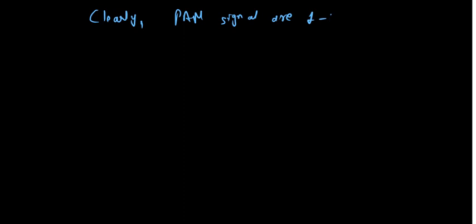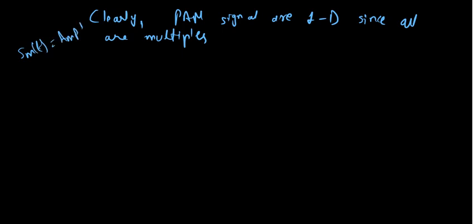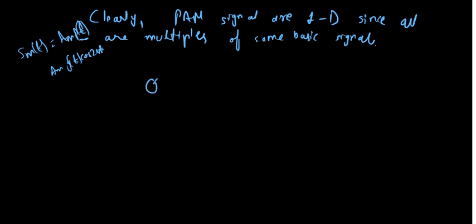Now we want the signal space representation of PAM signals. PAM signals are 1D signals because all waveforms are multiples of some basic signal: in baseband it's A_m · p(t), and in passband it's A_m · g(t) · cos(2πf_c t). They are just multiples of a basic signal, so they are one-dimensional, and we need only one basis function φ(t).